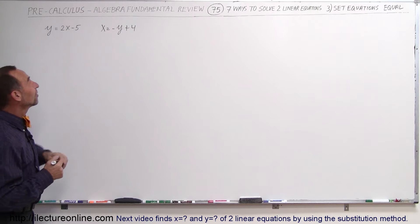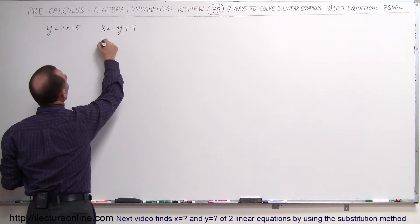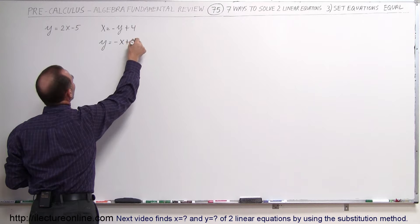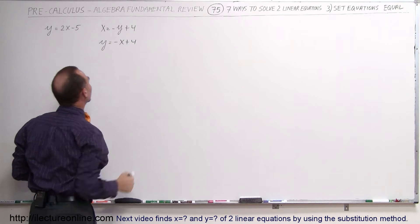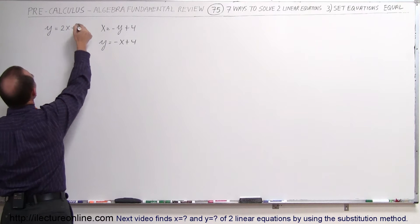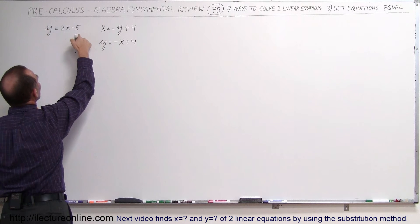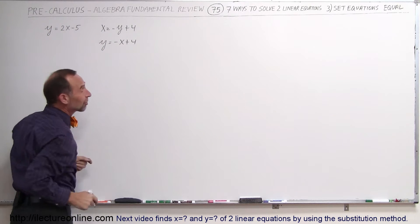So I'm going to rewrite the second equation. I'm going to write it as y equals minus x plus 4. When I send the minus y to the left side it becomes positive, the x to the right side becomes negative. Now I have two equations: y equals 2x minus 5, y equals minus x plus 4.